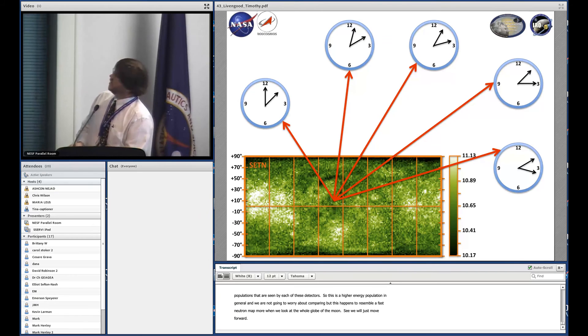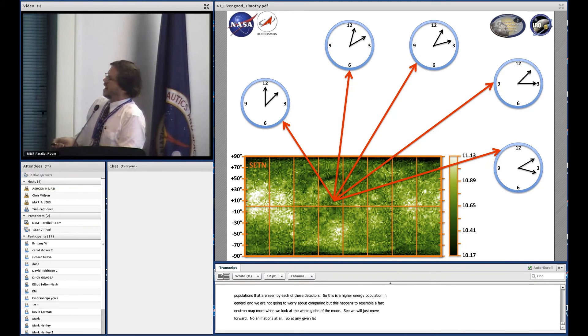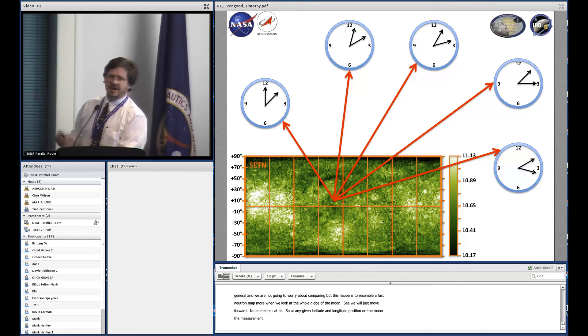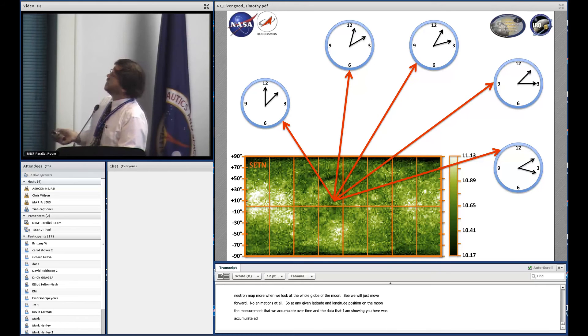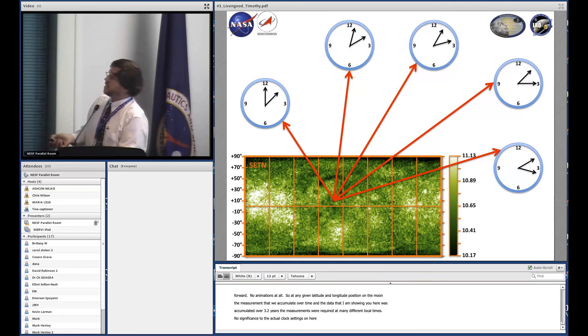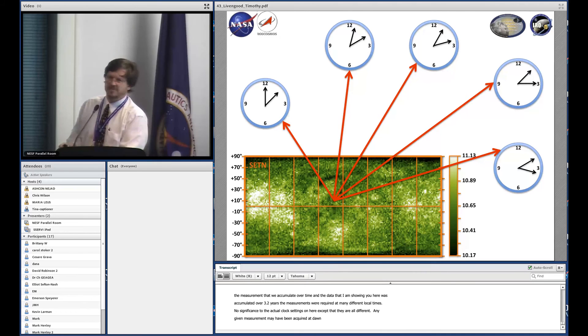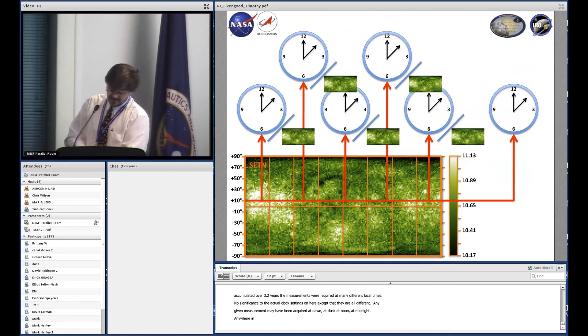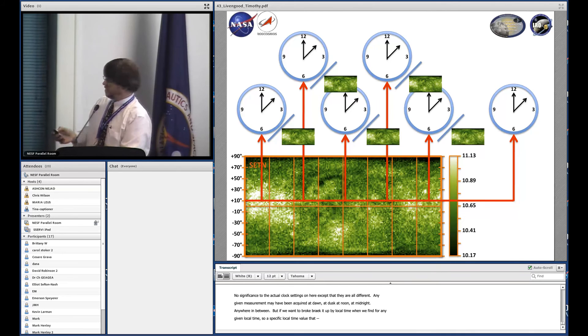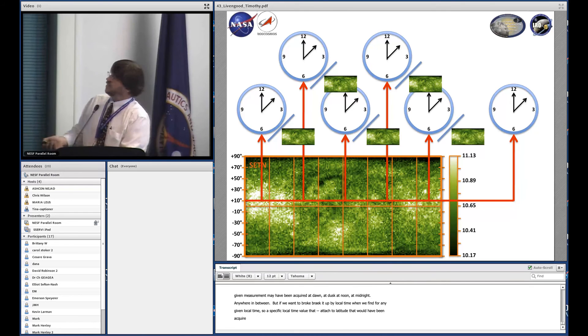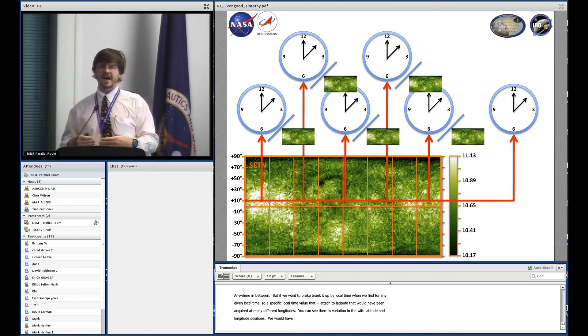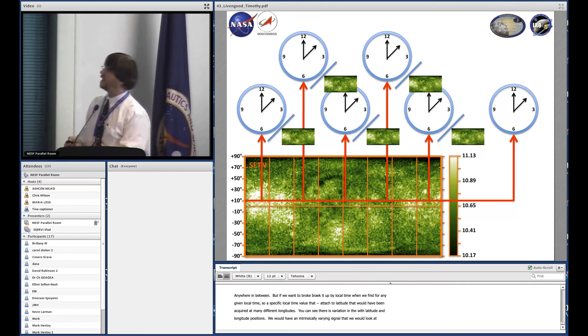At any given latitude and longitude position on the moon, the measurement that we accumulate over time—the data I'm showing here was accumulated over 2.3 years—the measurements were acquired at many different local times. There's no significance to the actual clock settings except that they're all different. Any given measurement may have been acquired at dawn, dusk, noon, midnight, or anywhere in between. But if we break it up by local time, any given local time value attached to a latitude would have been acquired at many different longitudes. There is a variation in the signal with latitude and longitude positions.